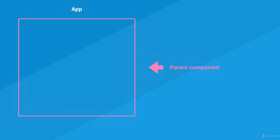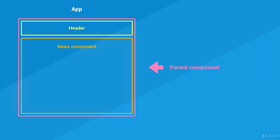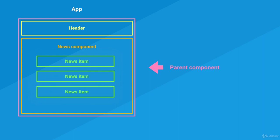We need to talk about the structure. We can have our application, and the first component is going to be the parent component that encloses all the other components. Then we'll have a header component containing the logo and an input text to filter news. Then a news component holding other components — the actual news items. Each news item will dynamically feed information to the news component.